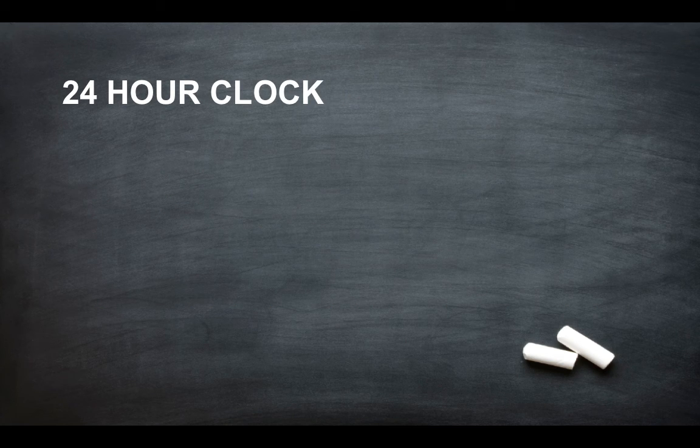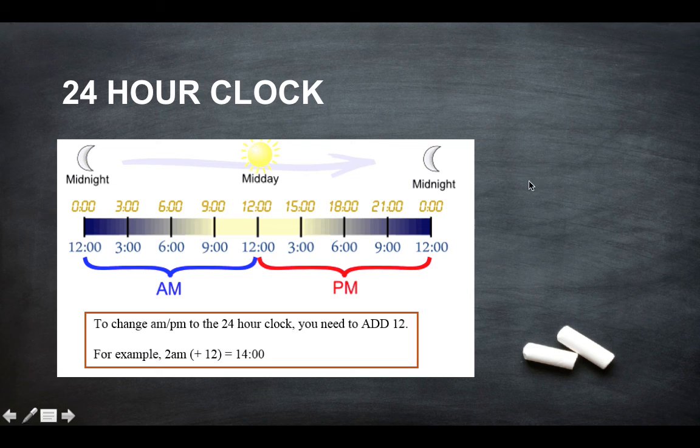So the 24 hour clock. As shown here, this is a really great example for you to get your head around the 24 hour clock. To change a.m. p.m. to the 24 hour clock, you need to add 12s.